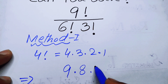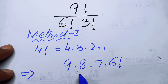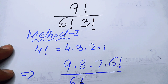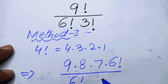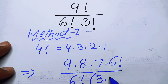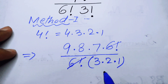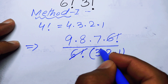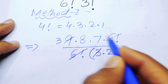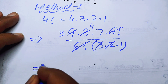Opening nine factorial up to six factorial gives us: nine multiplied by eight multiplied by seven multiplied by six factorial, all over six factorial. We also open three factorial as three multiplied by two multiplied by one. The six factorials cancel out.